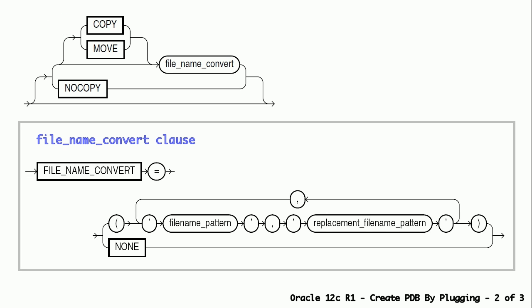COPY is the default option. MOVE clause can be used if we want the source database files to be moved to the new location for the new PDB. We cannot use COPY or MOVE clause along with AS CLONE clause. NO COPY clause can be used if we want the source database files for the PDB to remain in their current location — use this clause if there is no need to copy or move the source database files required to plug in the PDB. FILE NAME CONVERT clause can be used to instruct on how the file names are generated for the PDB.